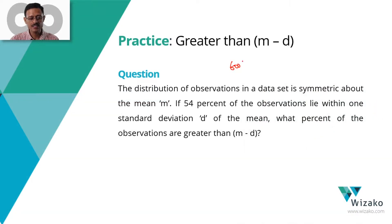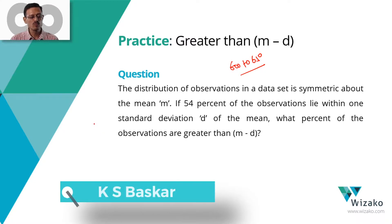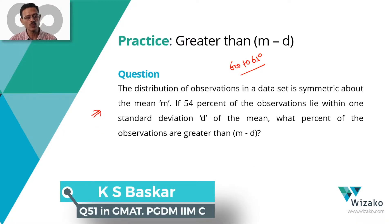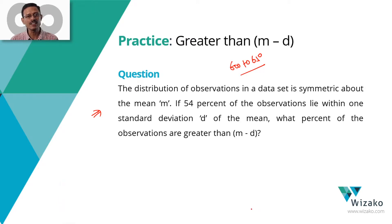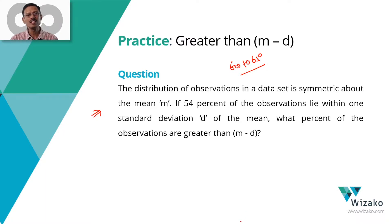This question I'll classify as a 600 to 650 level GMAT question. A question from standard deviation in GMAT is more likely to be like this one than the last one we saw. In the last question, we had to actually compute the value of standard deviation, which made it a little tedious. In GMAT, there's a high probability they'll ask you to work with understanding how standard deviation works rather than computing the value of it.